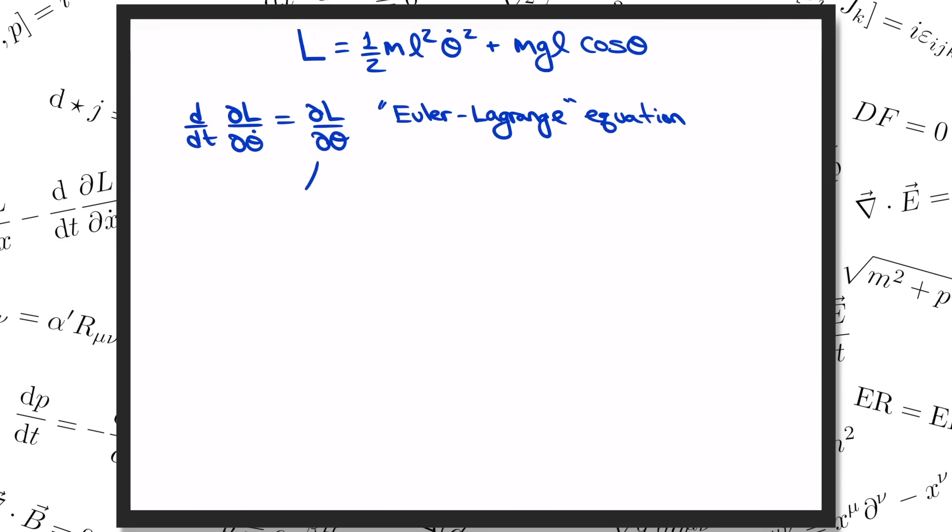By the way, the curly d's here stand for partial derivatives. If you've never seen those before, don't worry about it. For practical purposes, they behave just like ordinary derivatives. Now I'm not going to get into too much motivation as to where this Euler-Lagrange equation comes from in this video. What I just want to do for now is write it down and investigate the consequences. But the short answer is that the Euler-Lagrange equation is the condition for the action s to be minimized, where the action is defined as the integral of the Lagrangian.